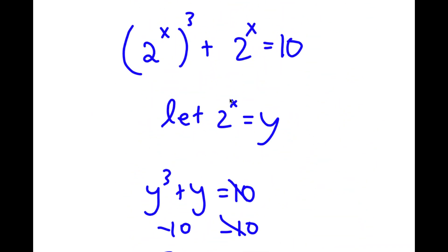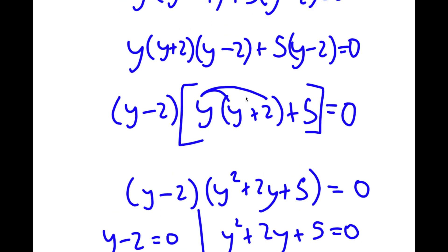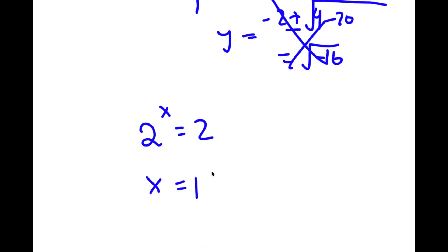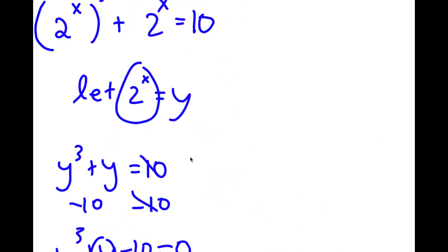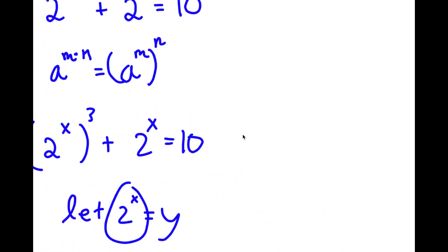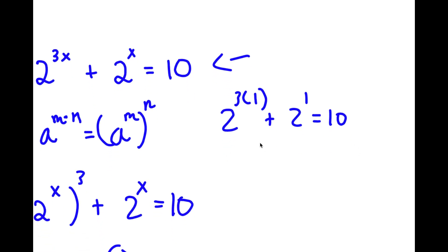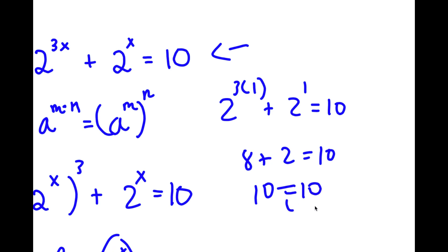Going back, remember we set 2 to the power of x equal to y. So now I have 2 to the power of x equals 2, meaning x is equal to 1. To check, plugging back in: 2 to the power of 3 times 1 plus 2 to the power of 1 is equal to 10. 2 to the power of 3 is 8, plus 2 is equal to 10 — meaning 10 equals 10. So this is correct.